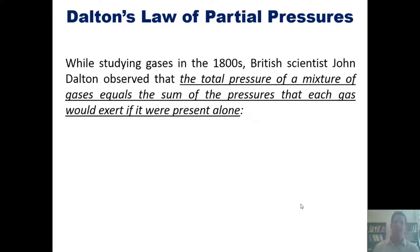All right, let's move on. While studying gases in the 1800s, British scientist John Dalton observed that the total pressure of a mixture of gases equals the sum of the pressures that each gas would exert if it were present alone. That's summarized by using this mathematical equation: total pressure of all these gases in one container equals the individual pressure of gas one added together with the individual pressure of gas two, three, four, five, etc., for however many gases you have in the chamber.